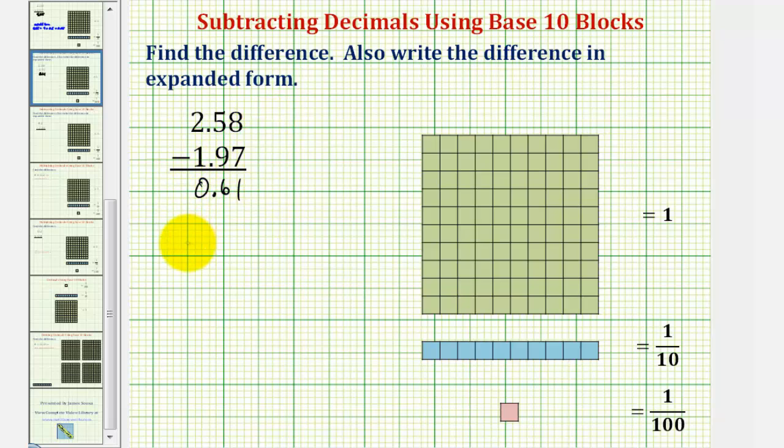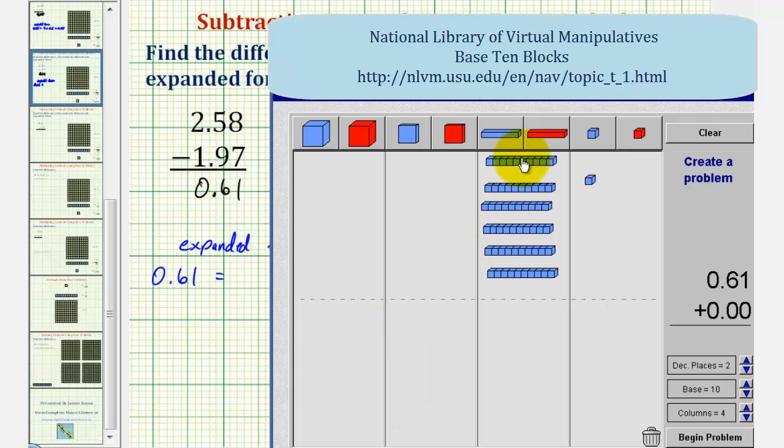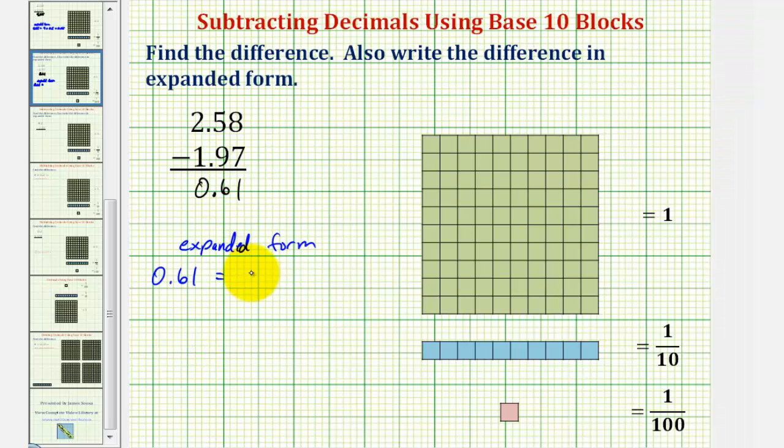We also want to write our difference in expanded form, which more closely resembles the answer we found using our base ten blocks. Sixty-one hundredths is equal to six longs plus one bit, or six tenths plus one hundredth. So six tenths plus one hundredth would be the expanded form of our difference.